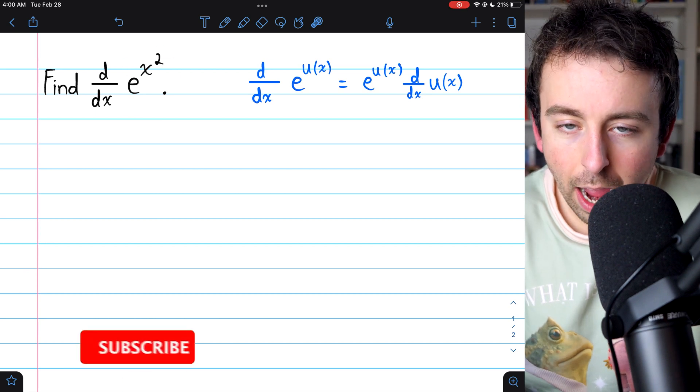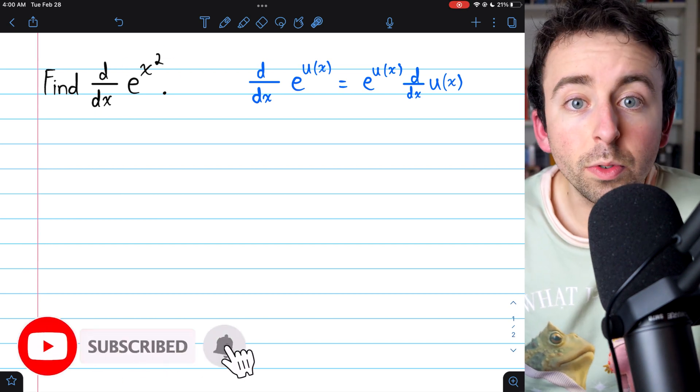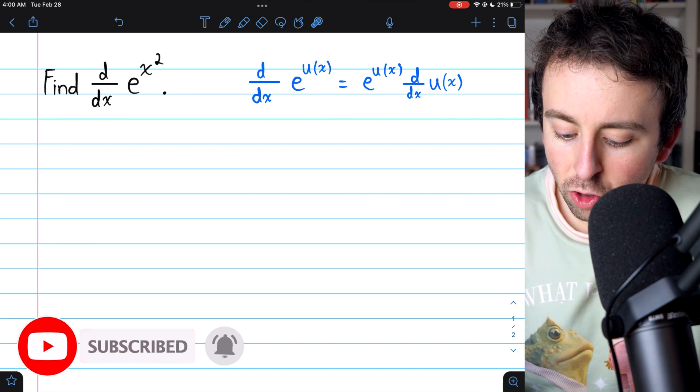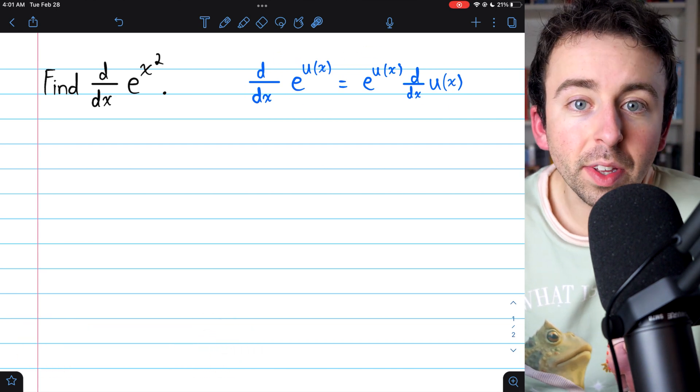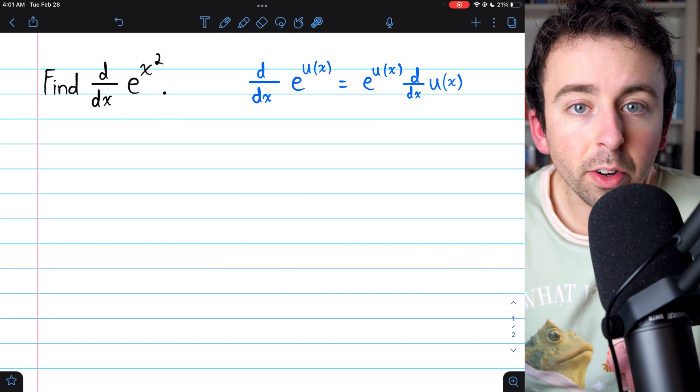To find the derivative of e to the power of x squared, we simply use the chain rule. I've written the general formula here for how you take the derivative of e to the power of some function of x.